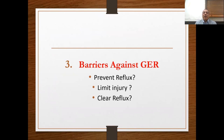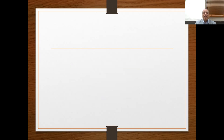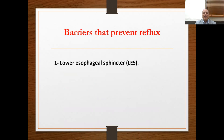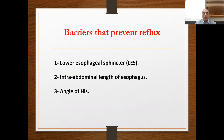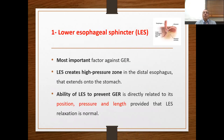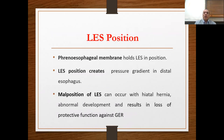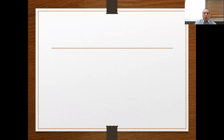Now we discuss the physiological barriers against gastroesophageal reflux. Factors preventing reflux include the lower esophageal sphincter, the intra-abdominal length of the esophagus, and the angle of His. The lower esophageal sphincter is the most important factor — it creates a high pressure gradient in the distal esophagus. Its ability to prevent reflux is related to its position, length, and pressure. The phrenoesophageal membrane holds the LES in position, but malposition may occur with hiatal hernia or abnormal development, leading to reflux.